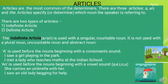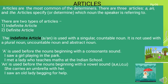Articles: Articles are the most common of the determiners. There are three articles: a, an, and the. Articles specify or determine which noun the speaker is referring to. There are two types of articles: indefinite articles and definite articles. The indefinite article a/an is used with a singular countable noun. It is not used with a plural noun, uncountable noun, or abstract noun.